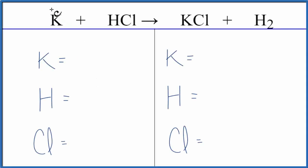In this video, we'll balance the equation of potassium plus hydrochloric acid gives us potassium chloride and hydrogen gas.